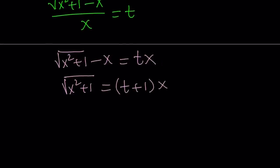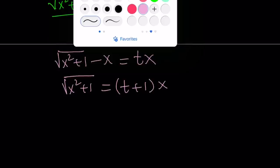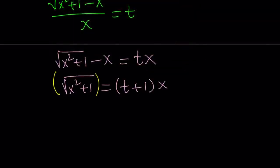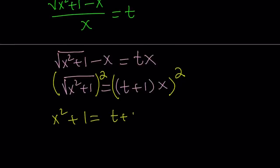Now is a good time to square both sides and get rid of all the radicals. When we square the left hand side, we get x squared plus 1. When we square the right hand side, we get t plus 1 squared multiplied by x squared.